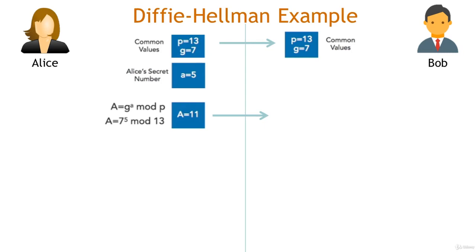Bob then selects his own secret number, we'll call that lowercase b. And let's say he chooses the number 8. Bob then performs a similar calculation to determine uppercase B using the formula uppercase B equals g to the lowercase b power modulo p. Bob then sends the value of capital B, which is 3, to Alice.